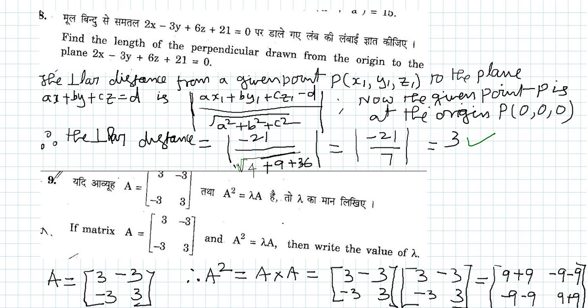Therefore the perpendicular distance equal to, substitute the value of x1, y1, z1 as 0, 0, 0, we get the perpendicular distance equal to mod of minus 21 divided by...